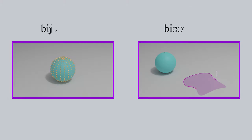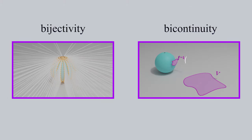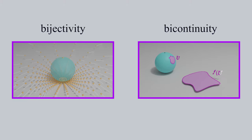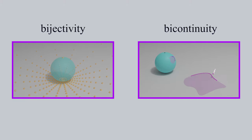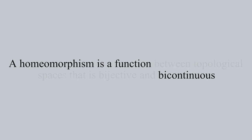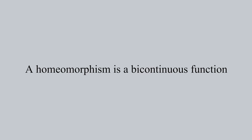Also in this video, we'll dive into bijectivity and bicontinuity, then ultimately prove the homeomorphism between the punctured sphere and plane. Looking back at this definition, it can really just be simplified to a bicontinuous function, because continuous functions are always between spaces with topologies, and the existence of an inverse function is dependent on bijectivity.